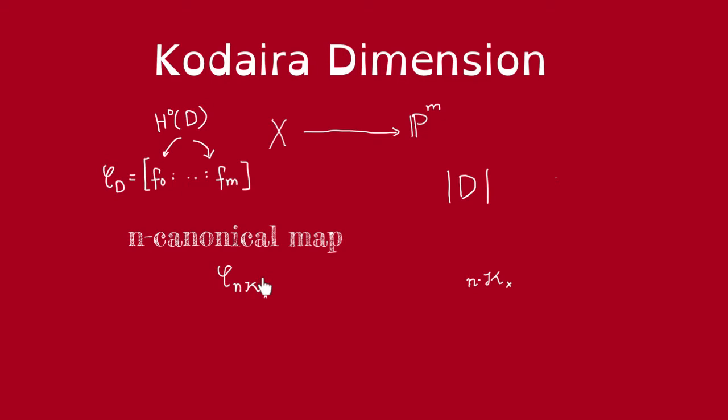More precisely, we are interested in the image of these maps. We're interested in how big they are, their dimension. Thus, we define the Kodaira dimension of X to be the maximum of the dimension of these images. Well, that's only well-defined if at least one of these n has global sections, right? So that we actually have some kind of map.